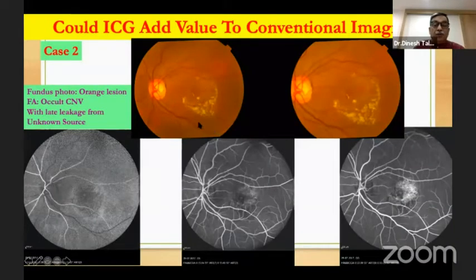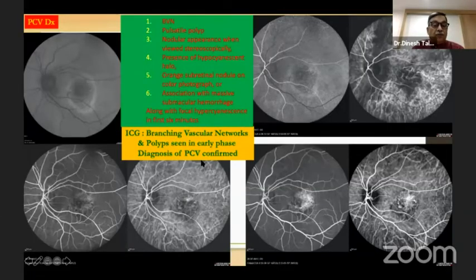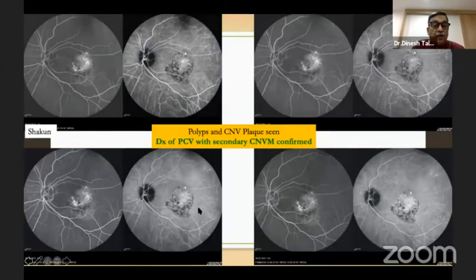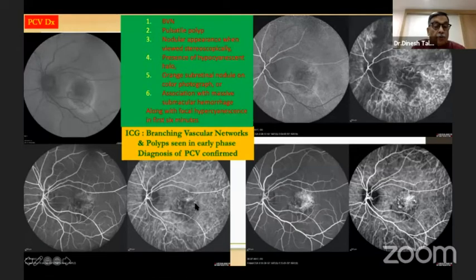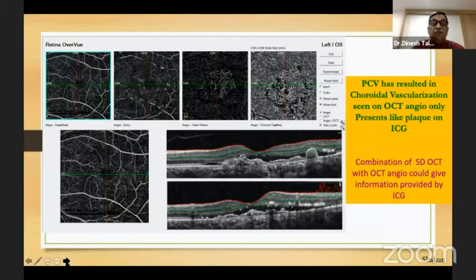Here is a patient with a lot of exudation. The FA only shows late leakage from an unknown source. The OCT is quite characteristic — a peaked PED with shallow underlying RPEDs and a double layer sign — all signs of PCV. When you do the ICG, you can see the branching vascular network and one or two small polyps. In the late phase, there is also a plaque lesion, indicating PCV has progressed to CNVM formation as well, which is confirmed by OCT angiography.